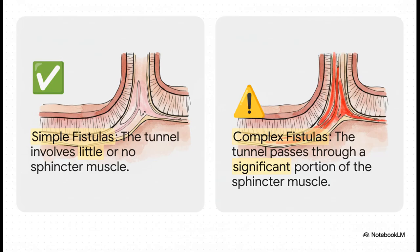Here's the key difference. On the left, you see a simple fistula — its tunnel path pretty much avoids the main gatekeeper muscle, or just involves a tiny bit of it. But on the right, that's a complex fistula. You can see its tunnel goes right through a big chunk of that muscle. And as you can imagine, treating that requires a whole different, much more careful game plan.